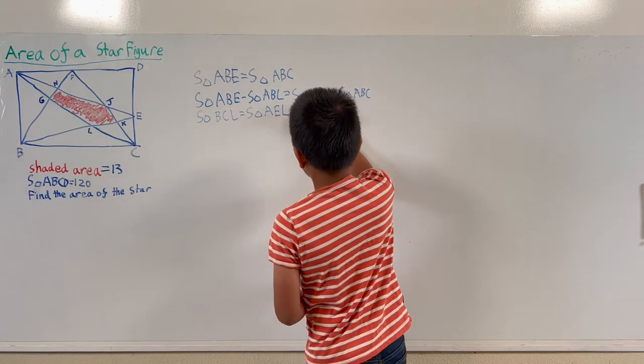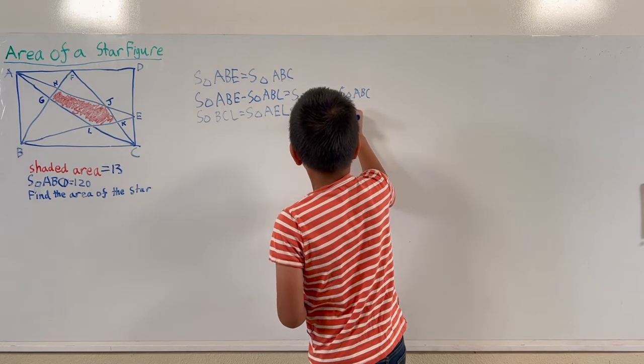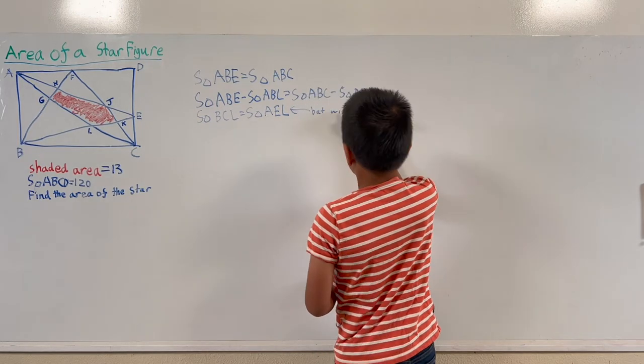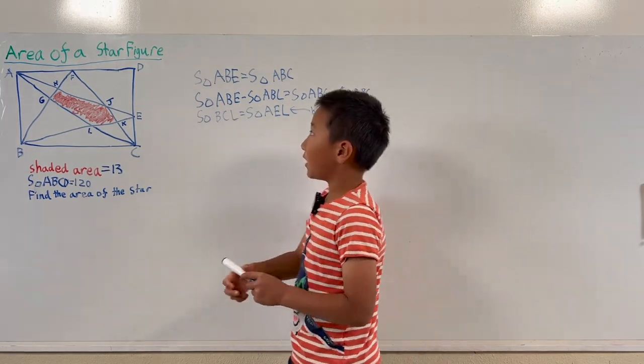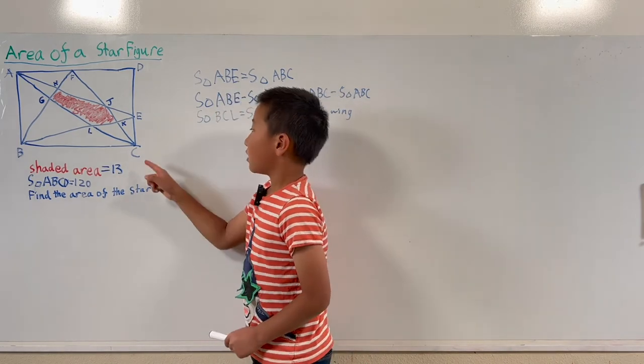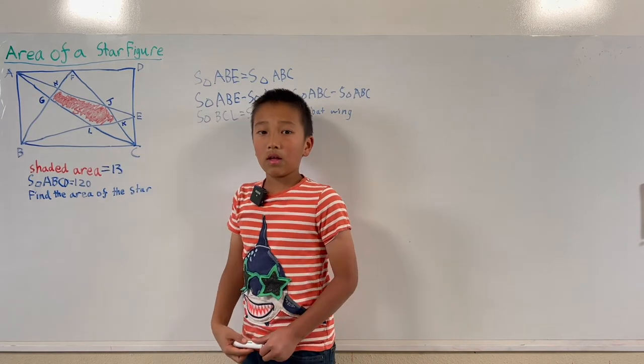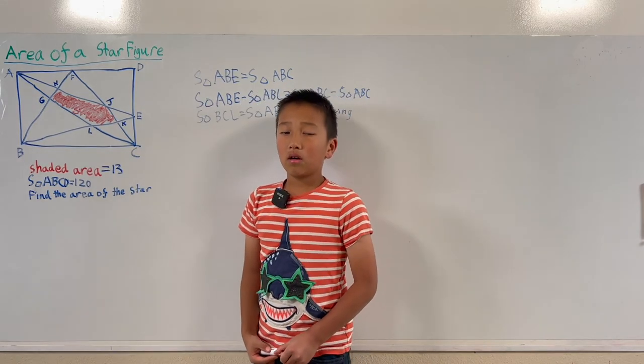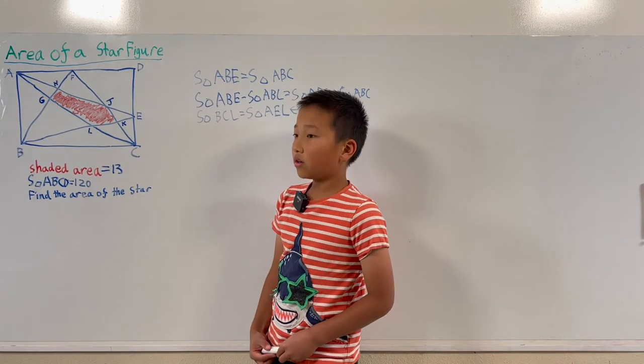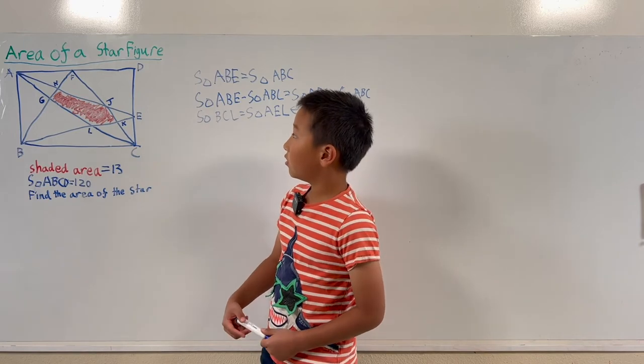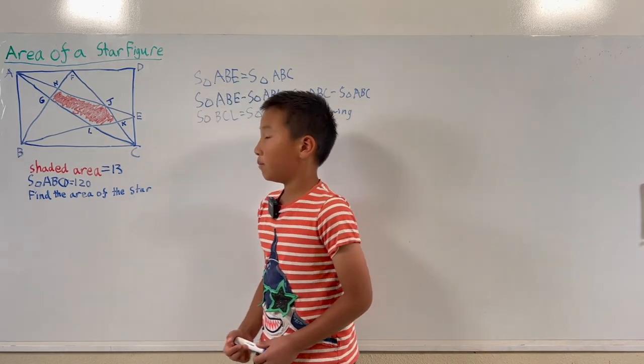Batwing is when you have two parallel lines. In this case, they are CD and AB. And between them, there are two triangles that are squished together which are AEL and BCL.